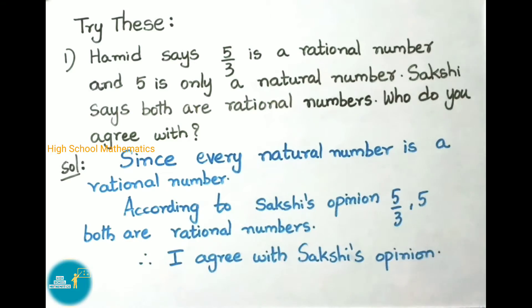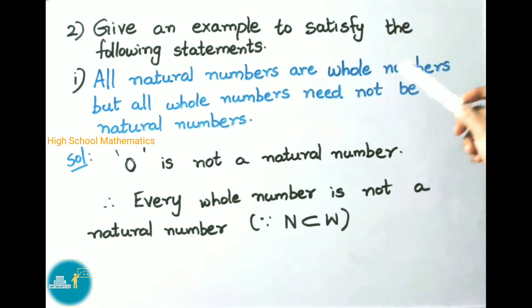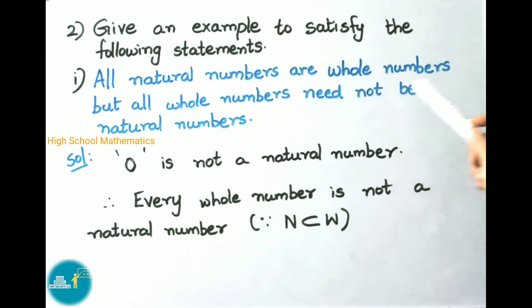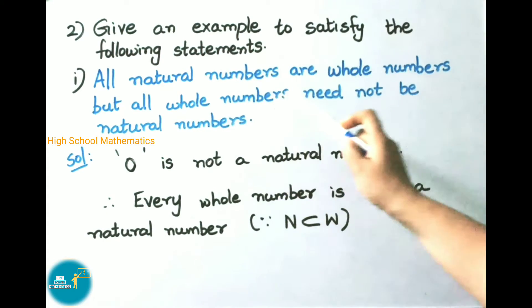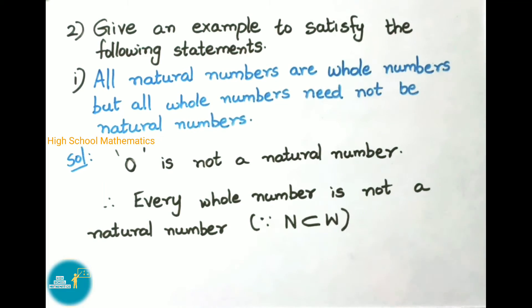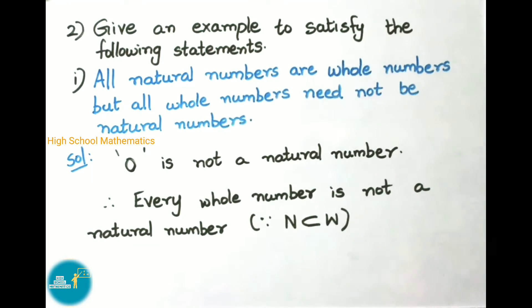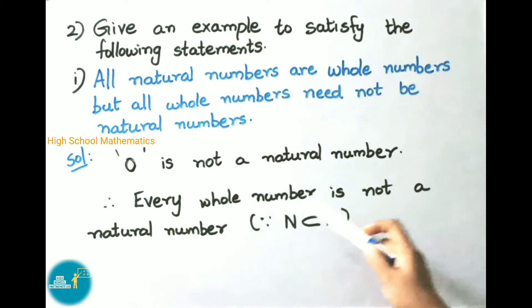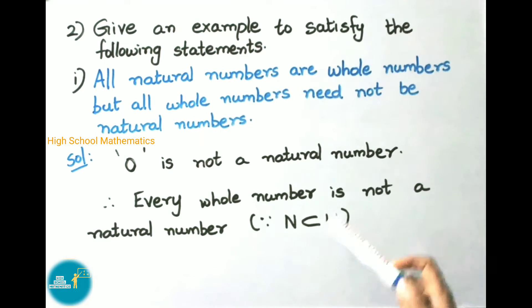Therefore I agree with Sakshi's opinion. Now question number 2: give an example to satisfy the following statements. First: all natural numbers are whole numbers, but all whole numbers need not be natural numbers. Yes, all natural numbers are whole numbers, but all whole numbers are not natural numbers, because 0 is not a natural number but it is a whole number. Therefore every whole number is not a natural number, since natural numbers are a subset of whole numbers.